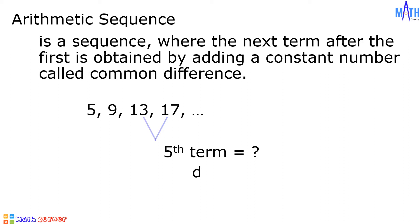It means that the common difference is equal to 4. To determine the fifth term, or a sub 5, let us add 17 and 4. 17 plus 4 is equal to 21, and the fifth term is equal to 21.